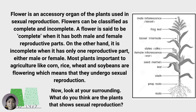A flower is an accessory organ of the plant used in sexual reproduction. Flowers can be classified as complete and incomplete. A flower is said to be complete when it has both male and female reproductive parts. On the other hand, it is incomplete when it has only one reproductive part, either male or female. Most plants important to agriculture, like corn, rice, wheat, and soybeans, are flowering, which means they undergo sexual reproduction.